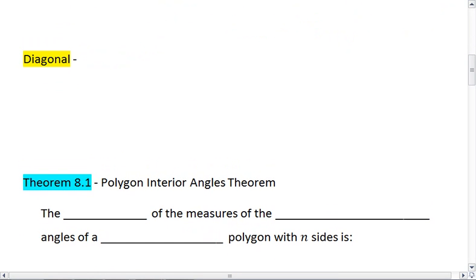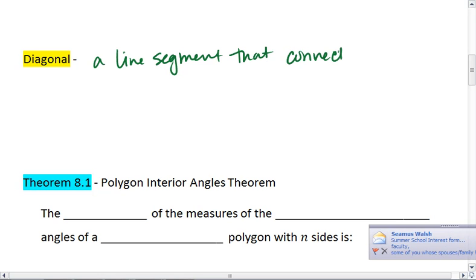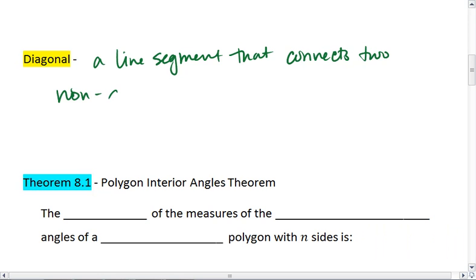A diagonal is a line segment that connects two non-adjacent—and this part's really important—vertices in a convex polygon.